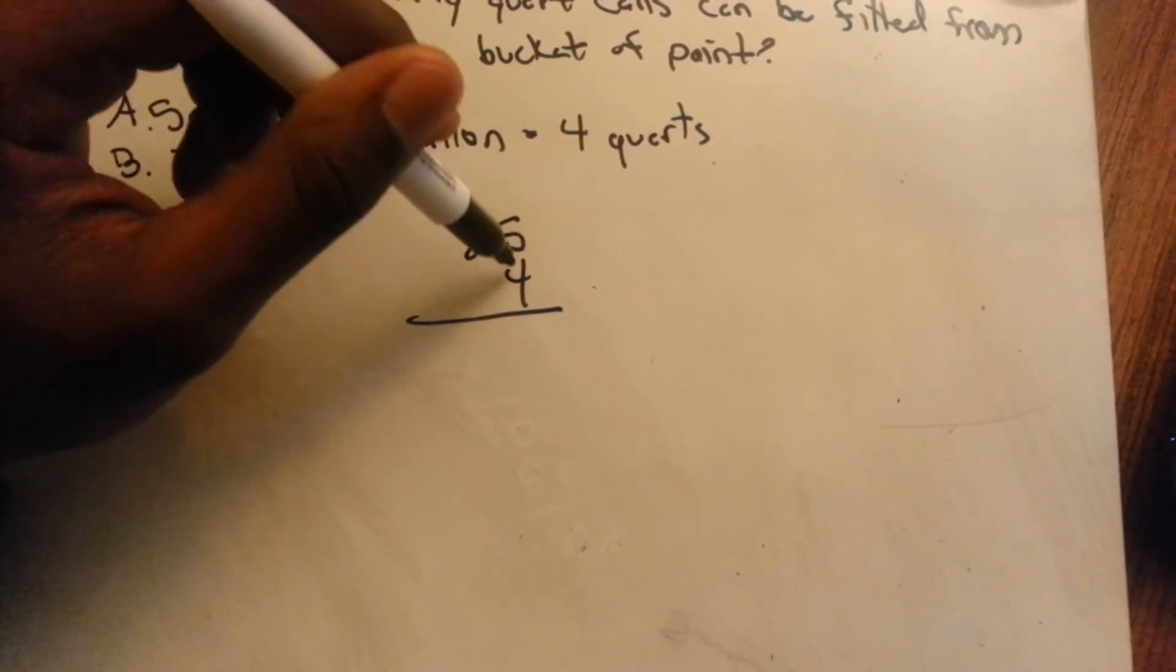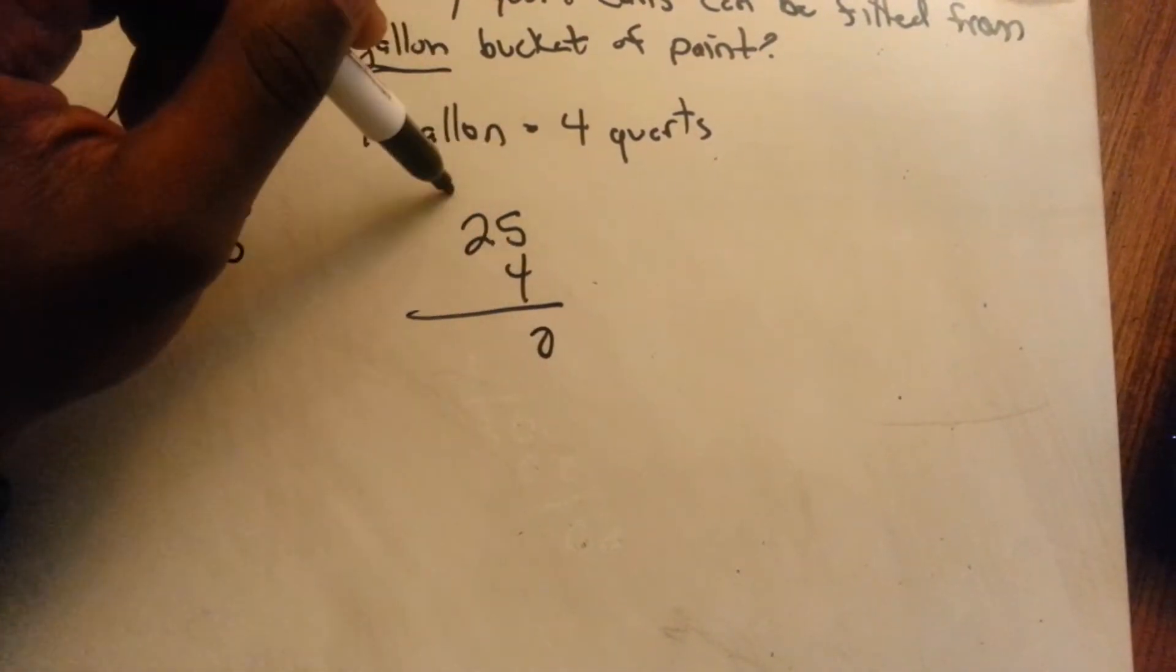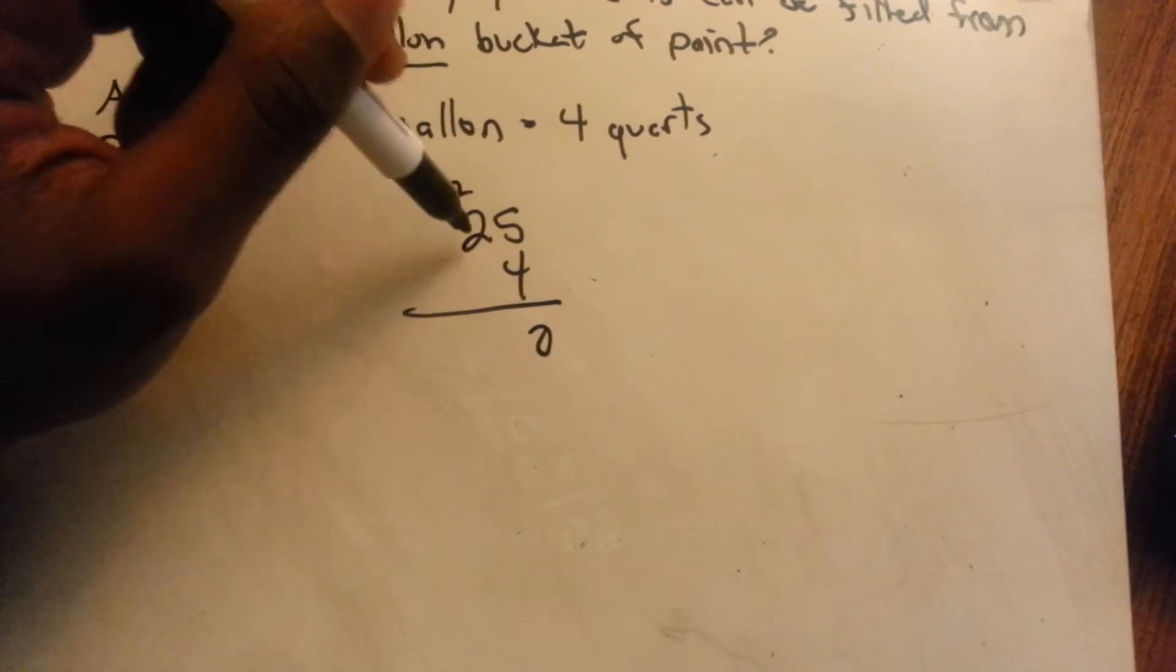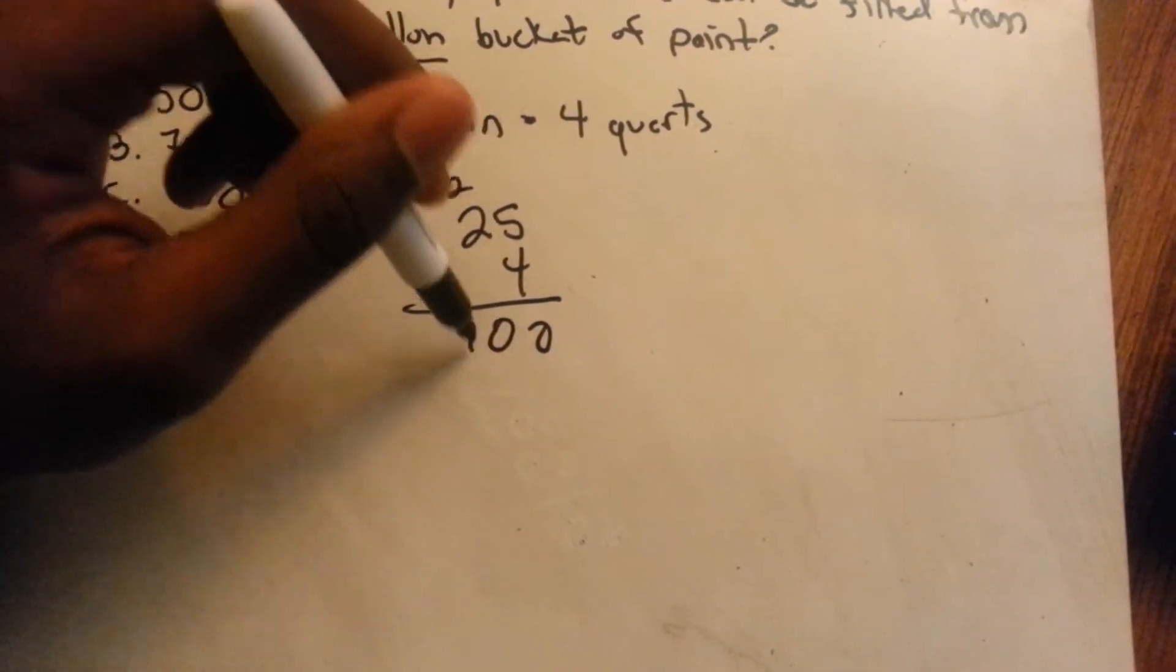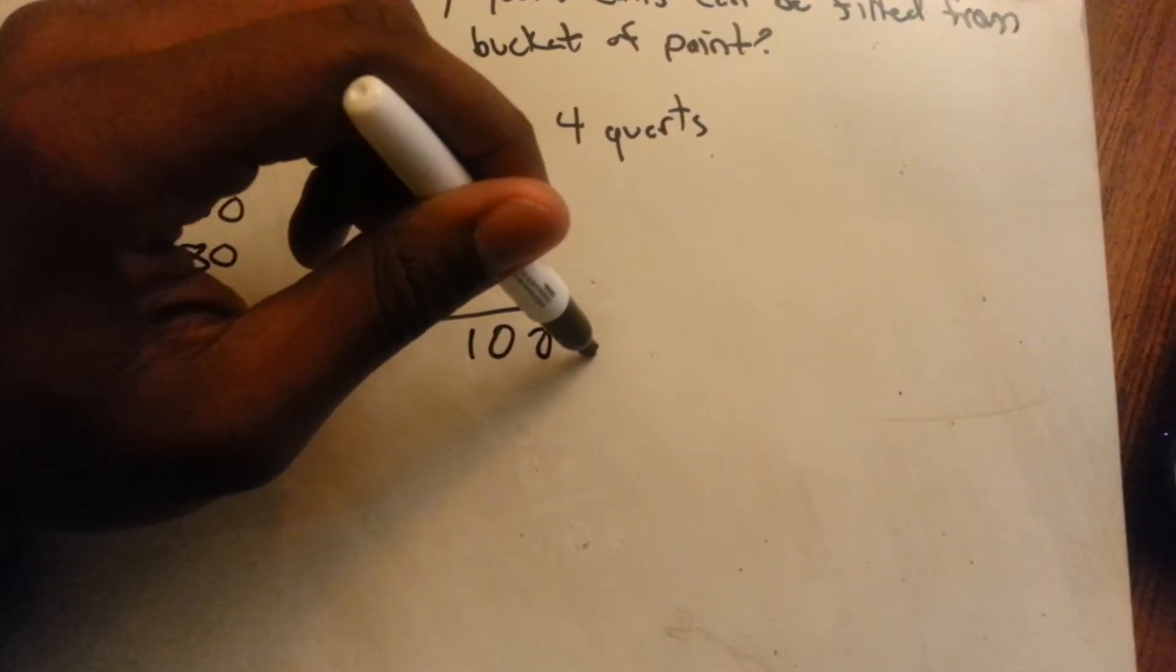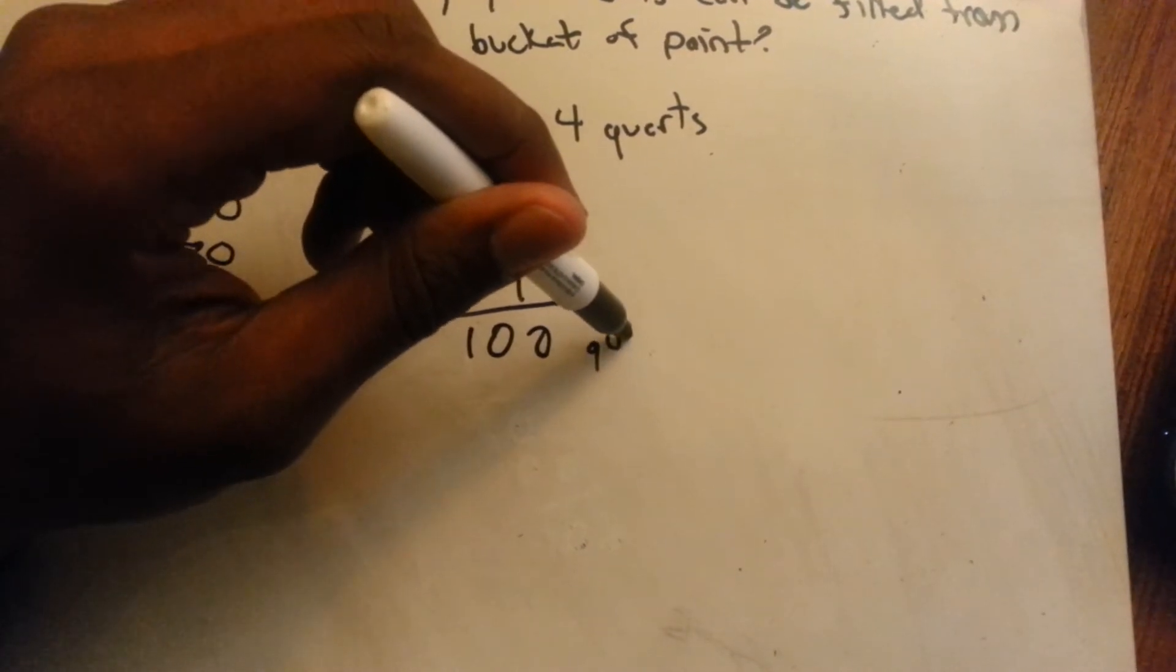And then that's your answer. Four times five is 20. Four times two is eight. Plus two is 10. That would be 100 quarts.